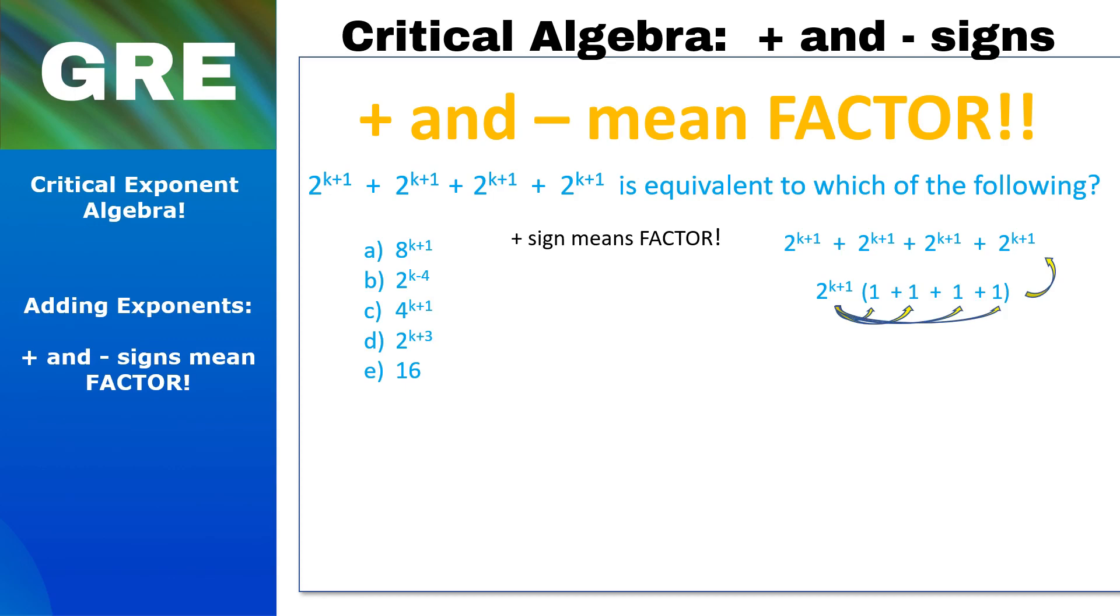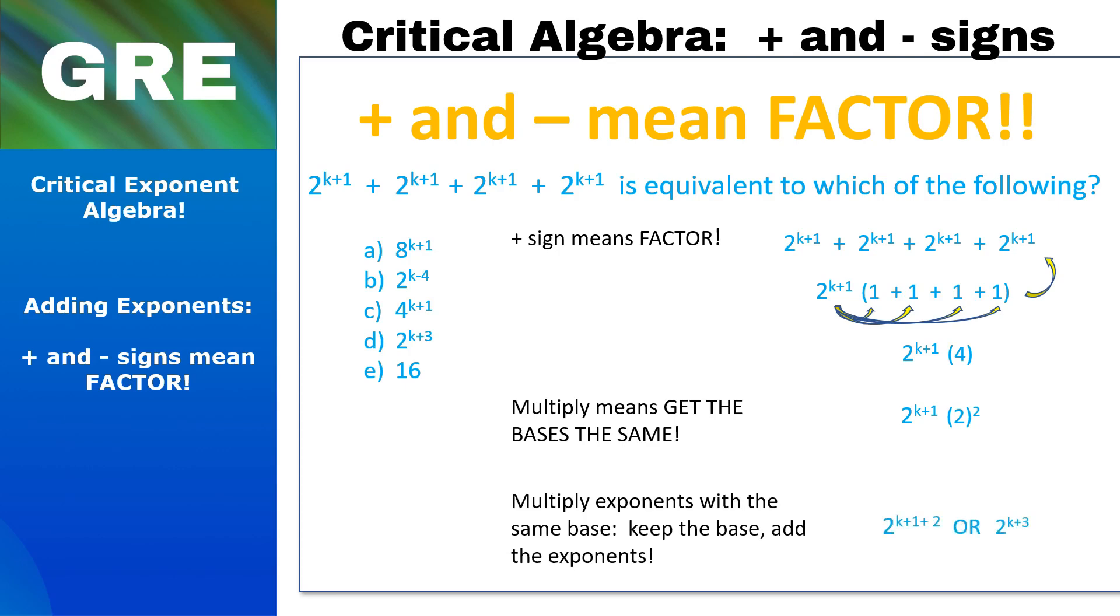All right, next step. Let's just add the stuff inside the parentheses and we get 4. All right, now we're in the land of multiplying exponents. And when we multiply exponents, that always means get the bases the same. And that's no problem because 4 breaks down to 2². And now that we have the bases the same, we multiply by keeping the base and adding the exponent. So what we get is 2^(k+3), answer choice D.